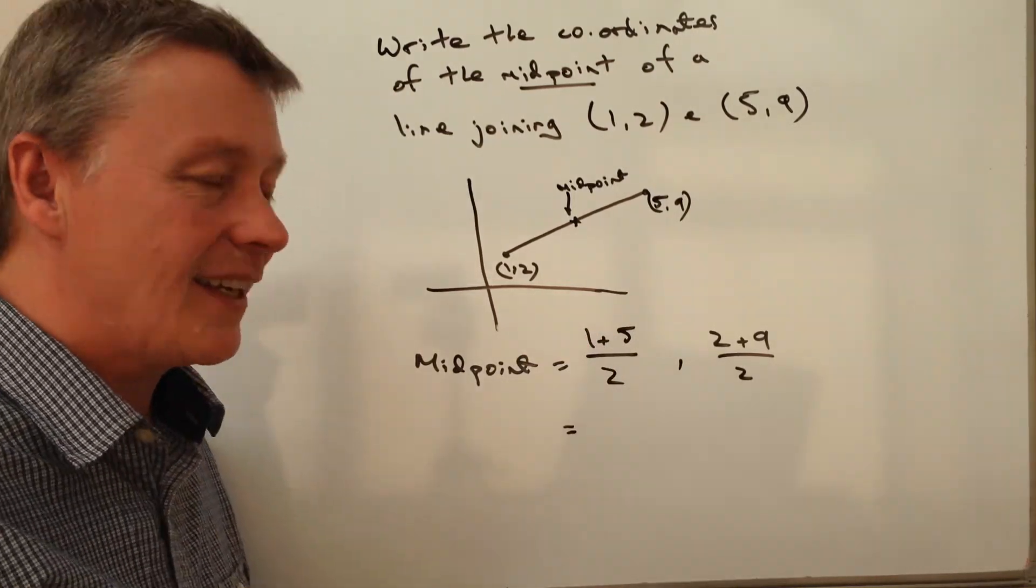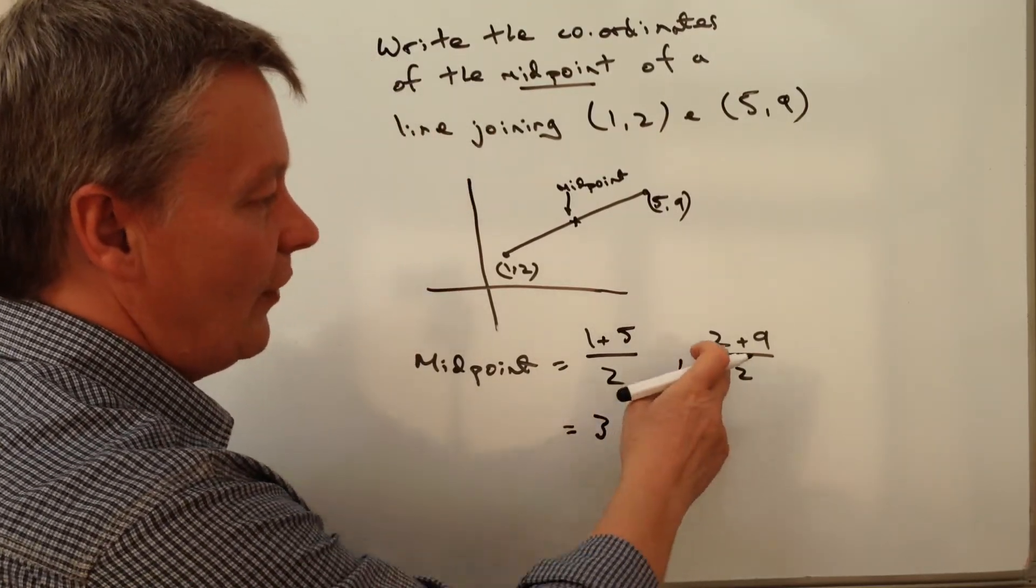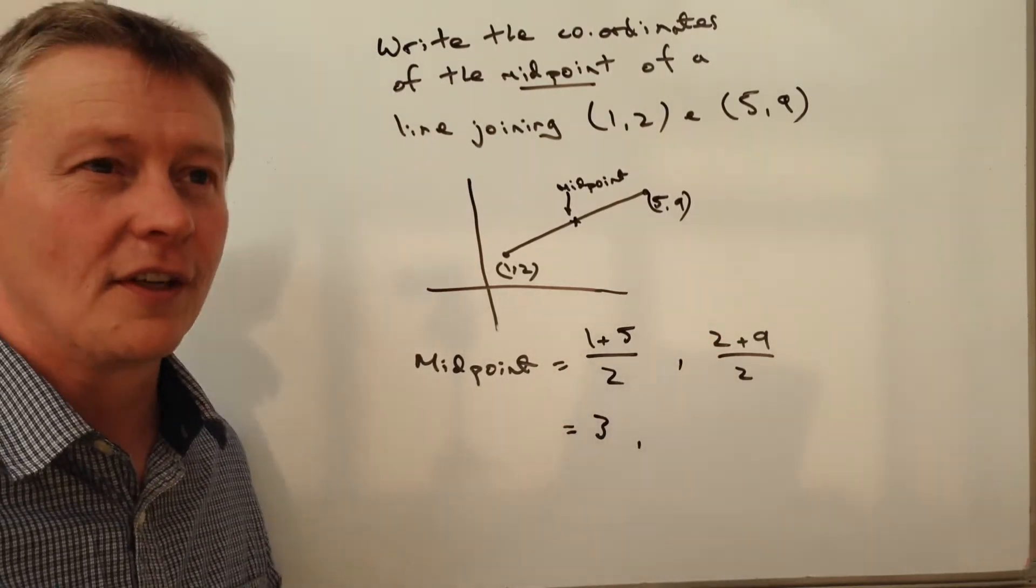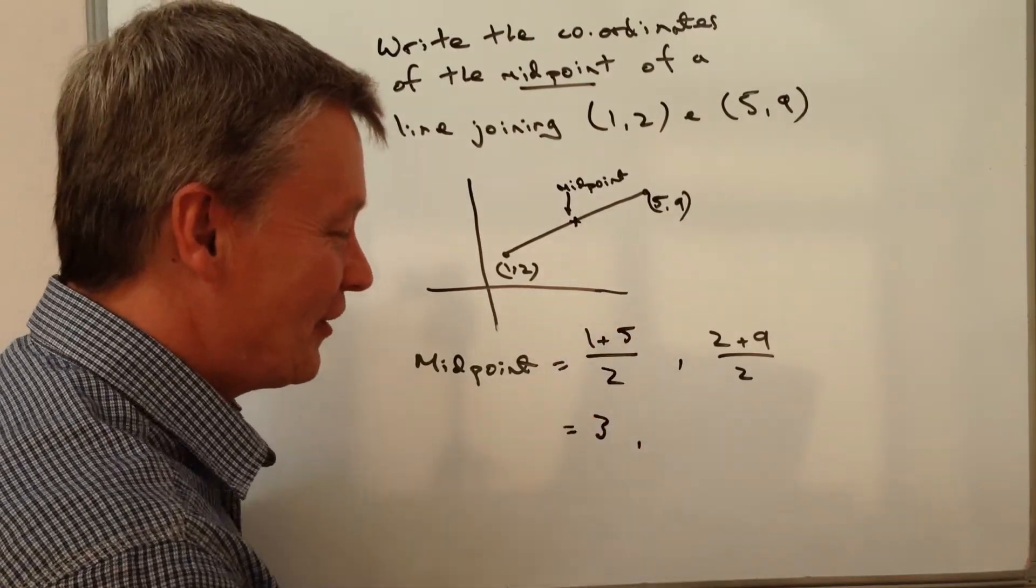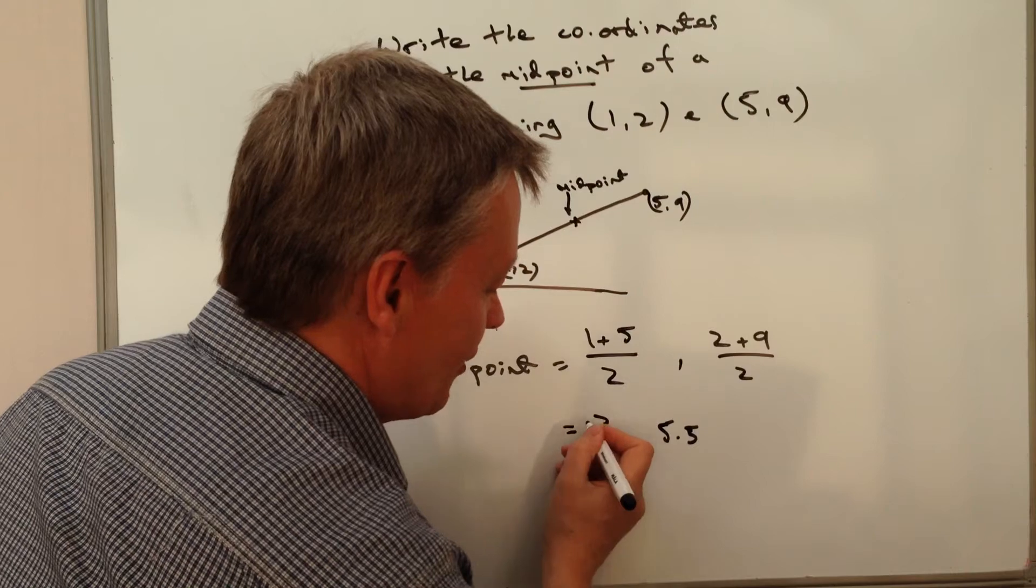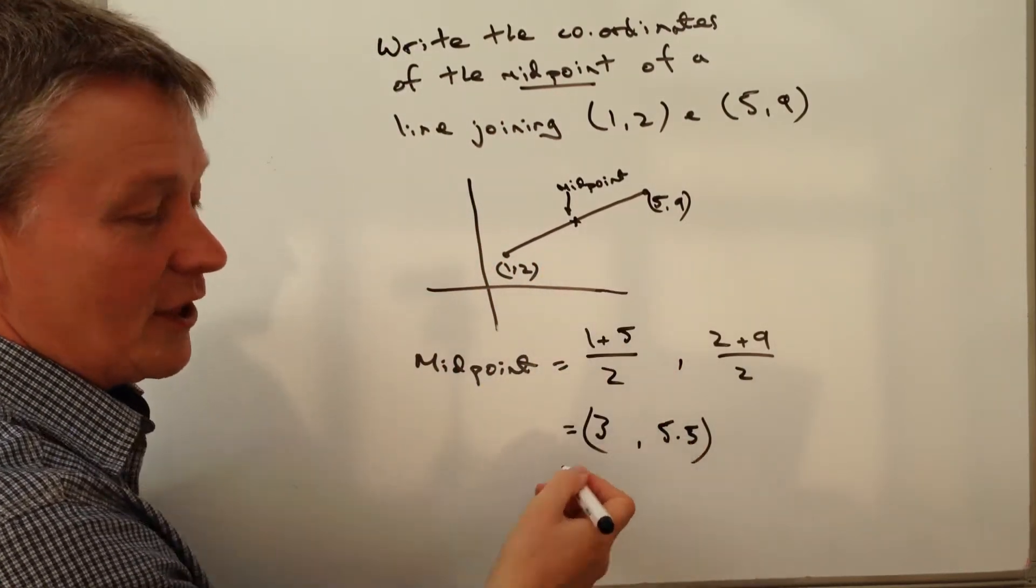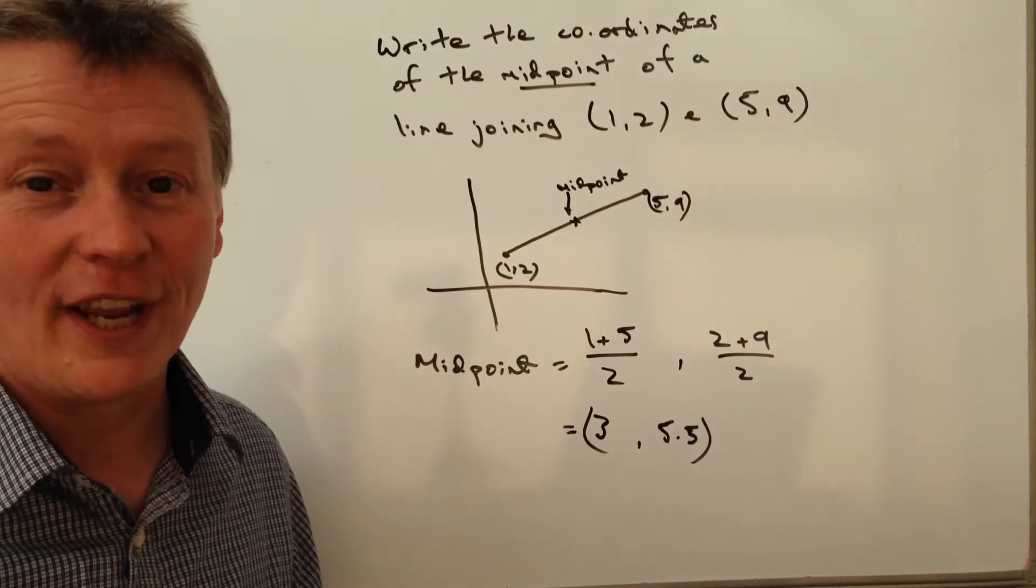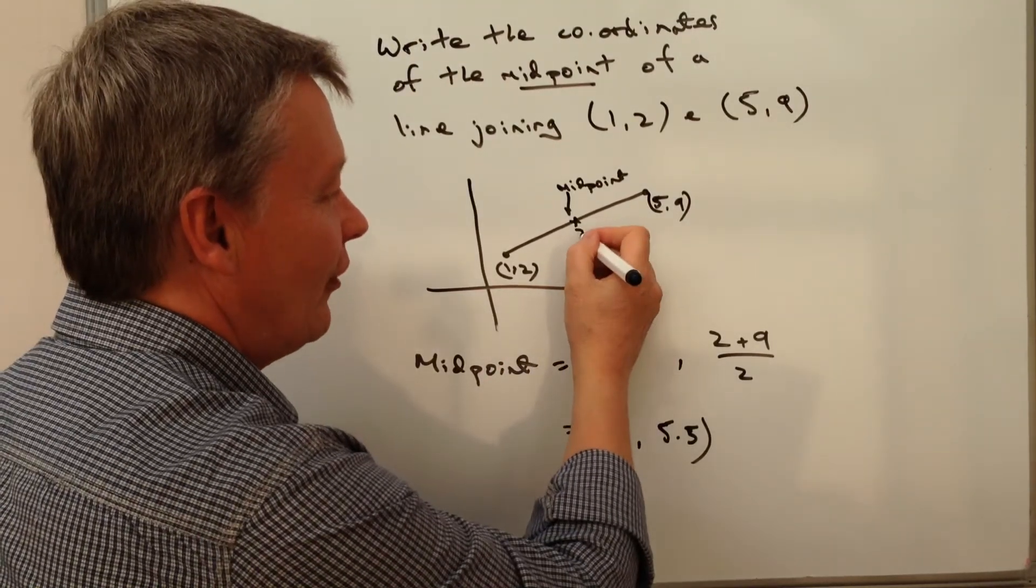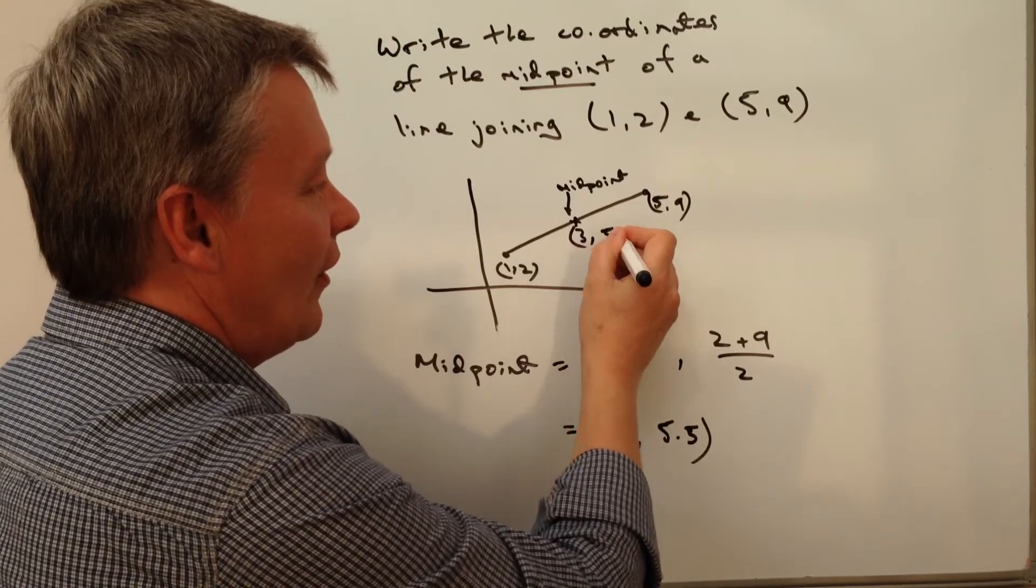1+5 is 6, and 6÷2 is 3. Then 2+9 is 11, and 11÷2 is 5.5. So in other words, the midpoint is going to be at coordinates (3, 5.5).